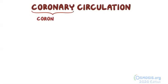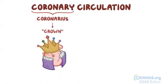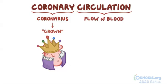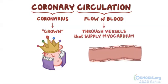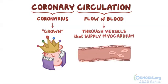Coronary comes from the Latin word 'coronarius' meaning crown, because the coronary blood vessels surrounding the heart resemble a little crown. Circulation refers to the flow of blood, so coronary circulation is the movement of blood throughout the vessels that supply the myocardium, also known as the heart muscle.